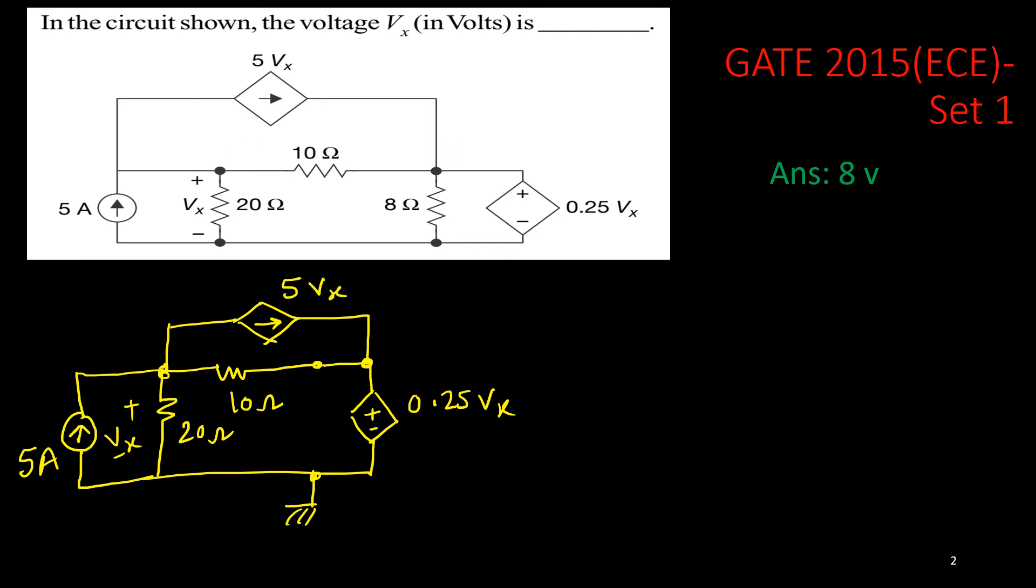This is your 5Vx. With respect to this one, this node potential is Vx, because the gap between these two, this two end, the gap is Vx, and one end is down there, so this node potential is Vx. Now, here, at this node, I can take KCL.